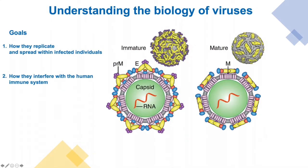The main goal of our research is to understand the biology of these viruses. This is an example of what a dengue virus particle looks like. These are small particles which are about 50 to 100 nanometers in diameter. They carry an RNA molecule which is translated into 10 different proteins, and they can't replicate outside of the human host, so they need to infect a host cell in order to make multiple copies of themselves.